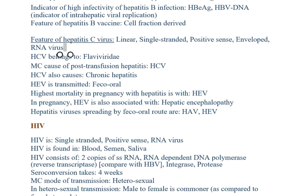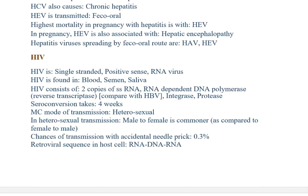HIV is a single-stranded positive-sense RNA virus found in blood, semen, and saliva. HIV consists of two copies of ssRNA. RNA-dependent DNA polymerase, i.e., reverse transcriptase — remember this is a commonly asked question. HIV also contains integrase and protease. Seroconversion takes four weeks. Most common mode of transmission is heterosexual; in heterosexual transmission, male-to-female is more common. Chances of transmission with accidental needle prick is 0.3%. Retroviral sequence in host cell: RNA → DNA → RNA.